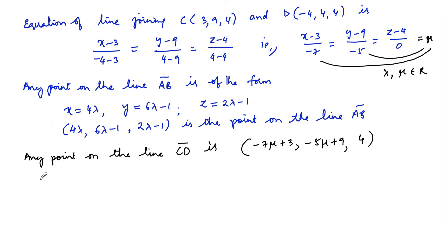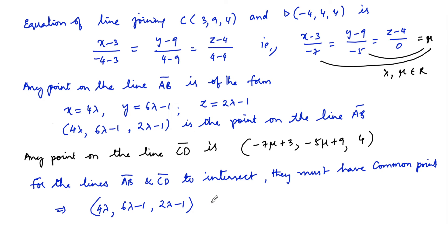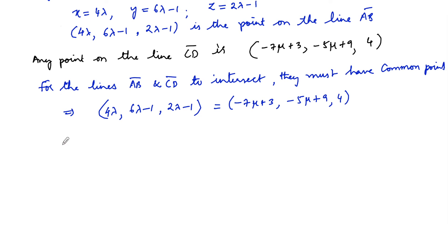For lines AB and CD to intersect, they must have a common point. So we equate the two parametric points: (4λ, 6λ - 1, 2λ - 1) = (-7μ + 3, -5μ + 9, 4). Comparing x-coordinates: 4λ = -7μ + 3, which gives 4λ + 7μ = 3 ... (equation 1).